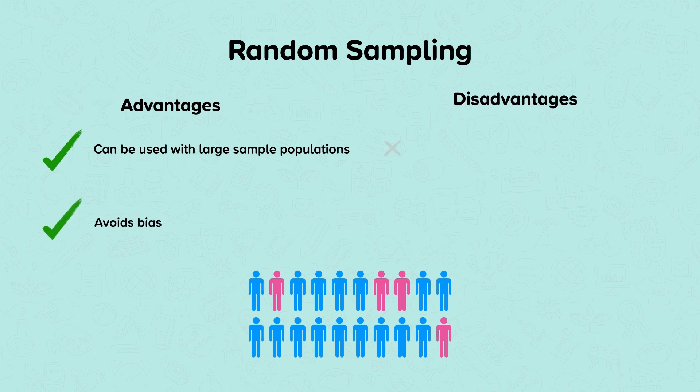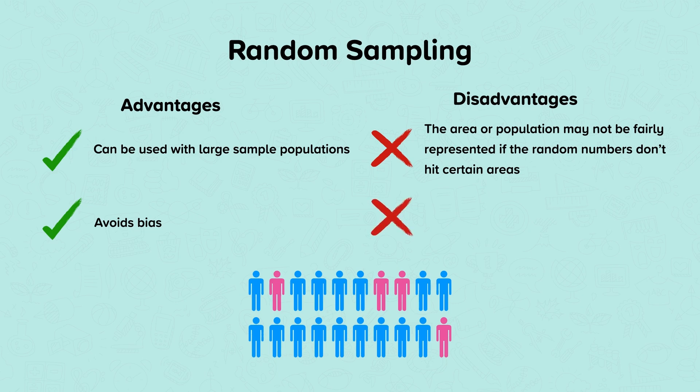Disadvantages are that the area or population may not be fairly represented if the random numbers don't hit certain areas. And it may not be possible to collect data from each selected sample. For example, access may be limited.